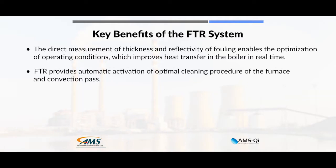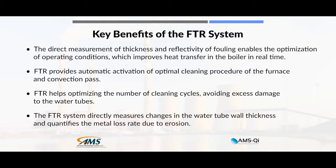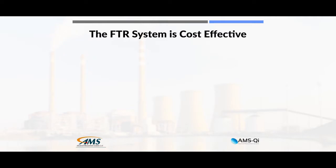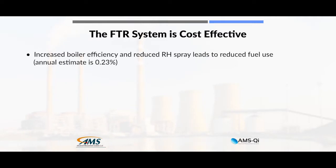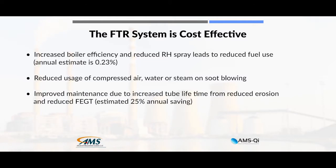FTR provides automatic activation of the optimal cleaning procedure of the furnace and convection pass. This helps to optimize the number of cleaning cycles, which avoids excess damage to the water tubes. In fact, the FTR system directly measures changes in the water tube wall thickness and quantifies the metal loss rate due to erosion. The increased boiler efficiency and reduced reheater spray can save almost a quarter of a percent in fuel. The use of compressed air, water, or steam for soot blowing is also reduced. Increased water tube life from reduced erosion and lowered flue exit gas temperature saves about 25% in annual maintenance costs.